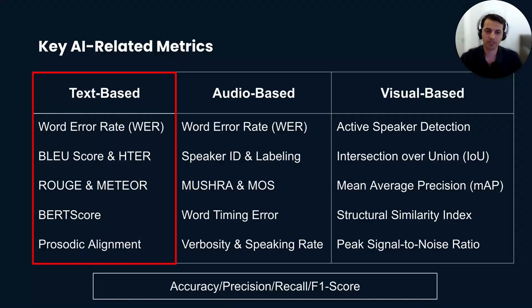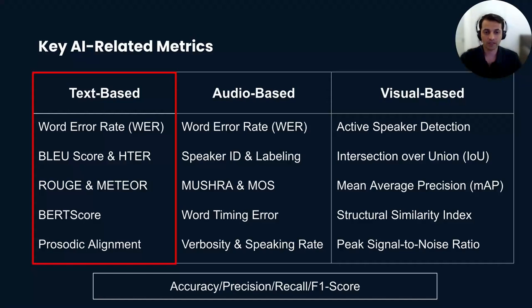Let's start with text-based AI product metrics. Word Error Rate (WER) is used in text transcription or text generation to measure the rate of errors made in the output text compared to the original.